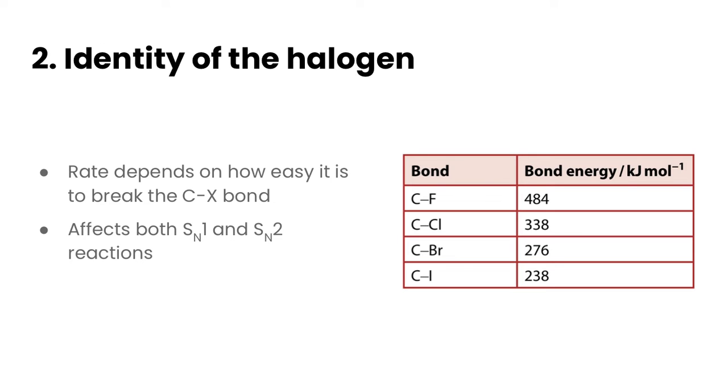The second factor that affects the rate of nucleophilic substitution reactions is the identity of the halogen itself. Now this does affect both SN1 and SN2 reactions because they are both involving the breaking of the carbon halogen bond in its rate determining step. Looking at the CX bond, where X is the halogen, the rate is going to depend on how easy it is to break that CX bond.